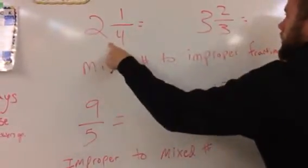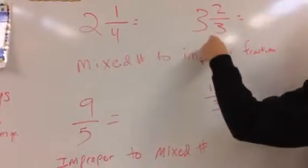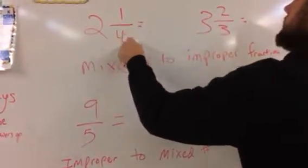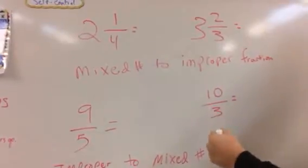Okay everybody, you got 2 and 1 4th right here and we have 3 and 2 3rds here. We would like to turn these into improper fractions and here's how you do it.